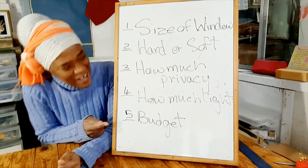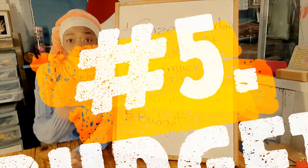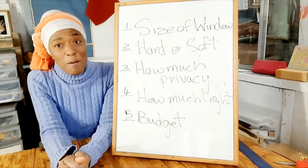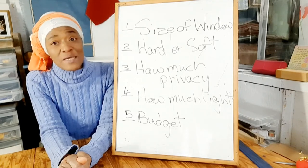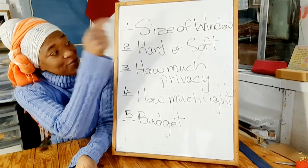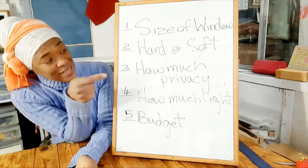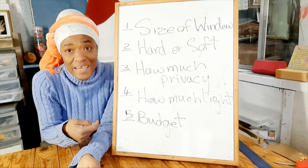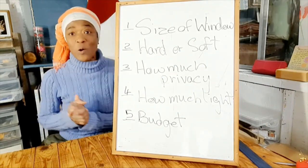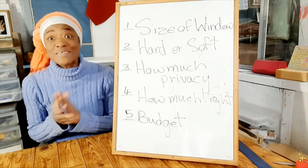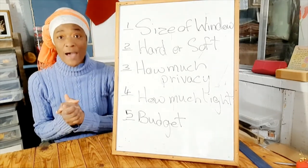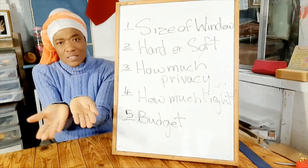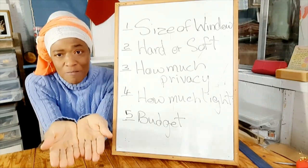Let's move on to the fifth factor, which is the budget. Your budget will be influenced by the size of your window, hard or soft window treatments, and also how much privacy or how much light you need to let in. Therefore you have to decide: this is the budget I have to spend on this window, and I'm going to look at the other factors, but they will all be considered within the limit of the budget.